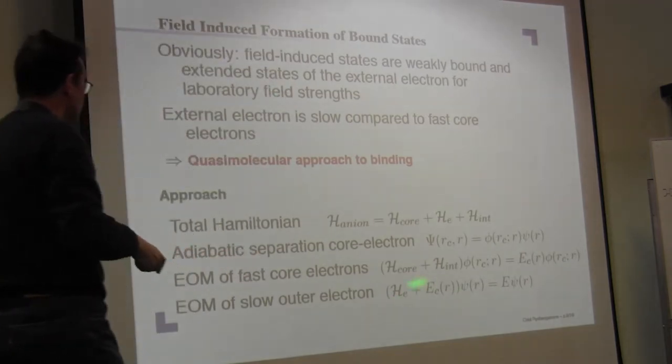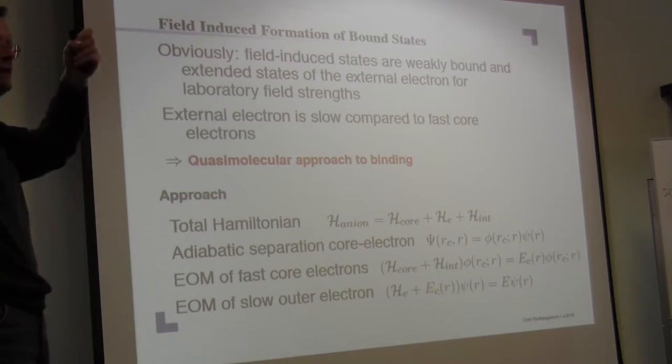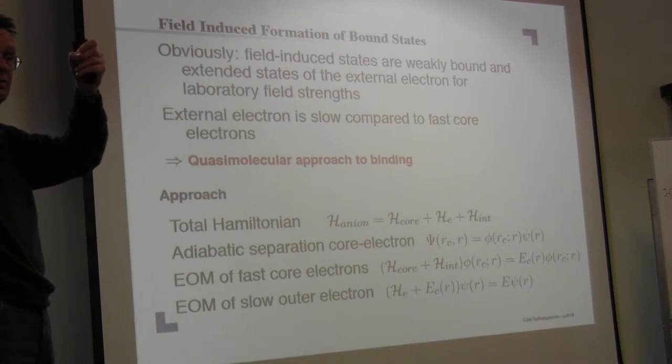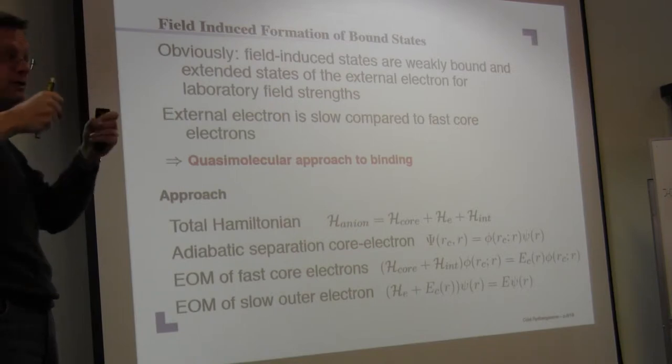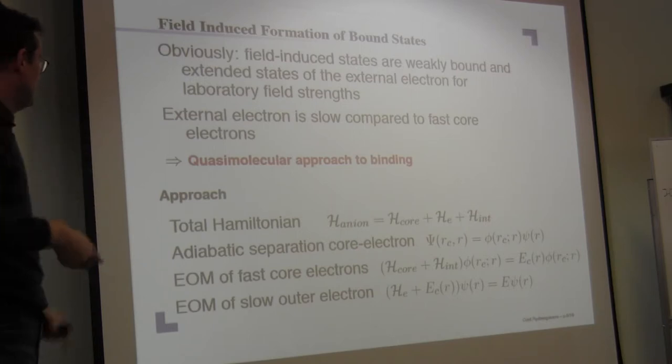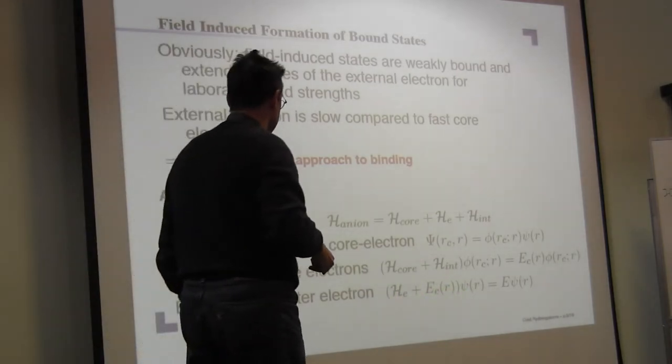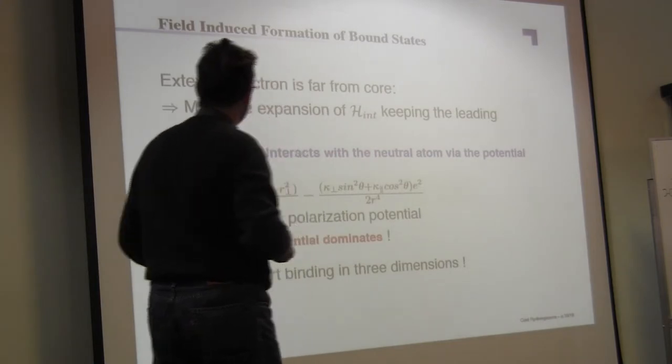And then you get a potential energy surface, but now the potential energy surface is due to a fixed position of the outer electron, not like in Born-Oppenheimer where we have fixed nuclei. It's a fixed position of the outer electron, and in that problem, what is rapidly moving is the core electrons.